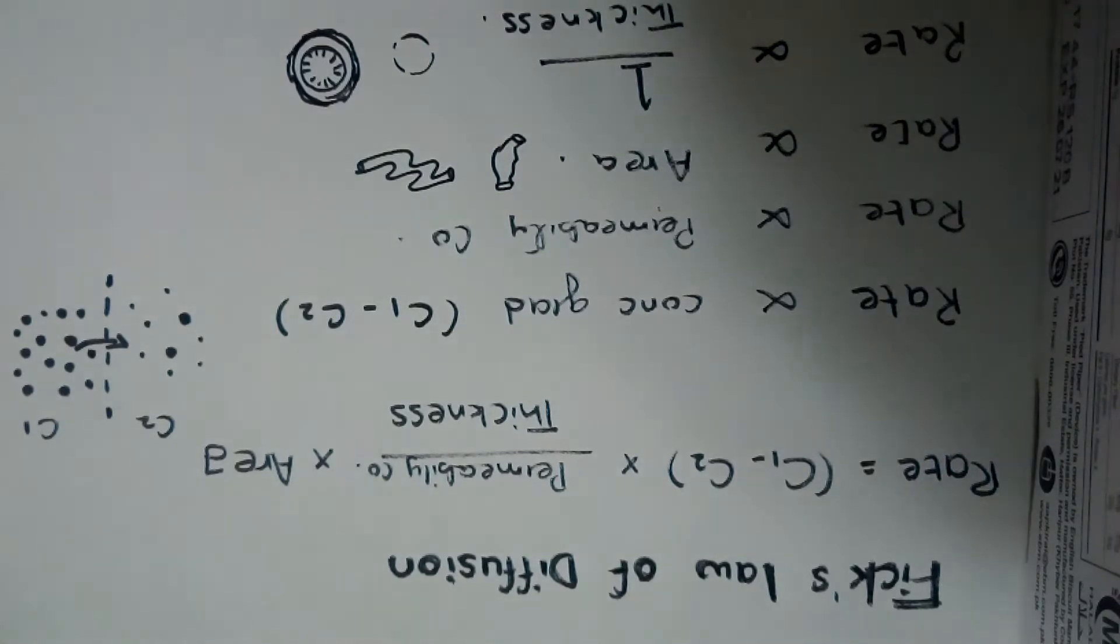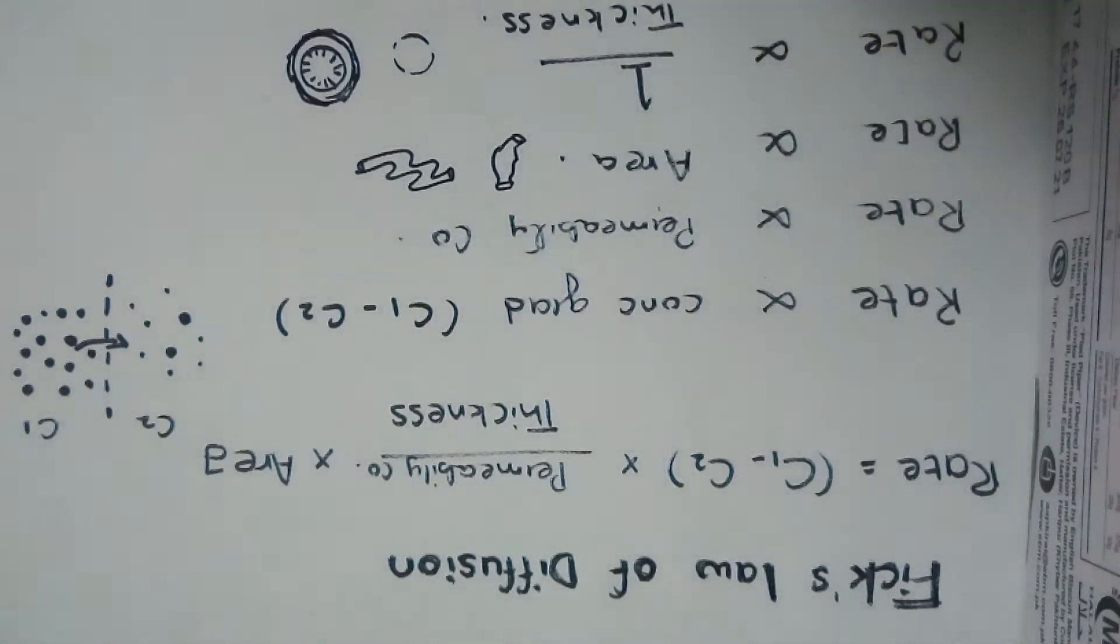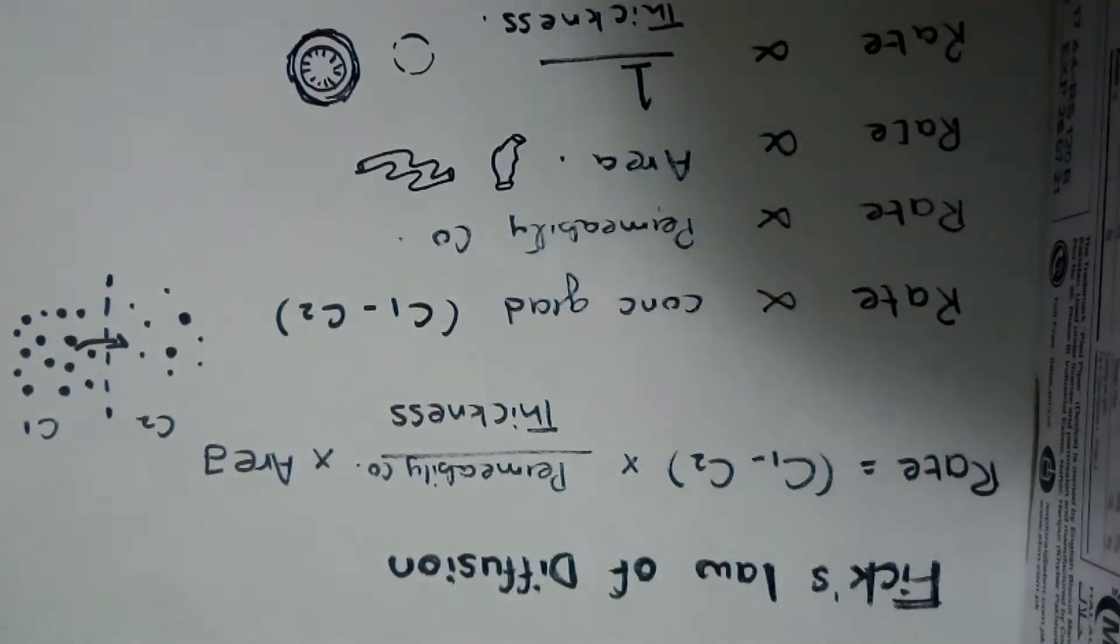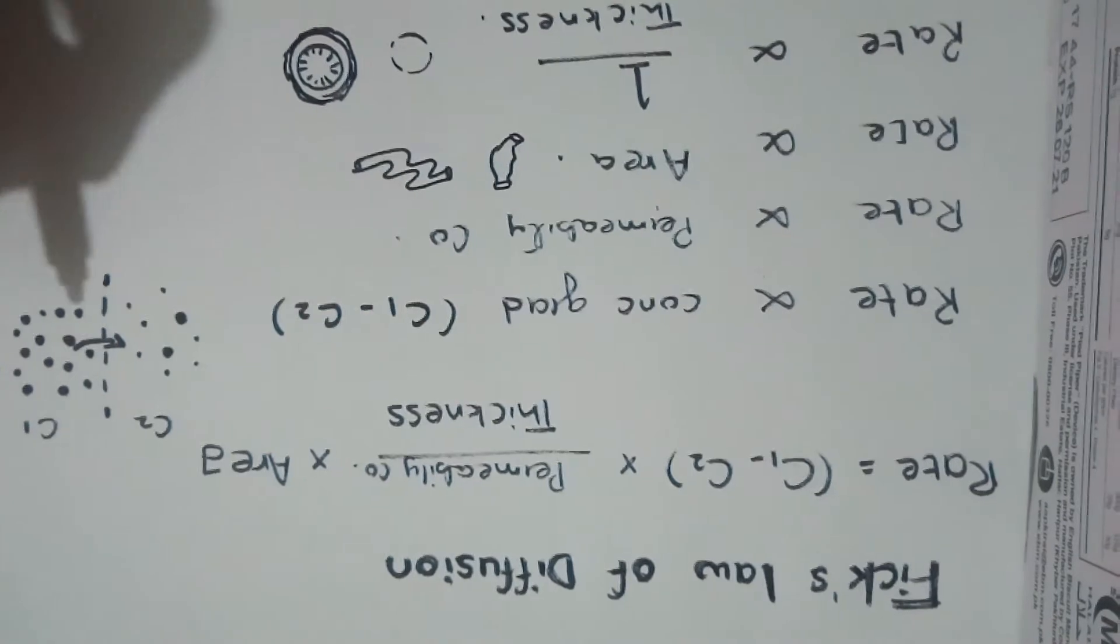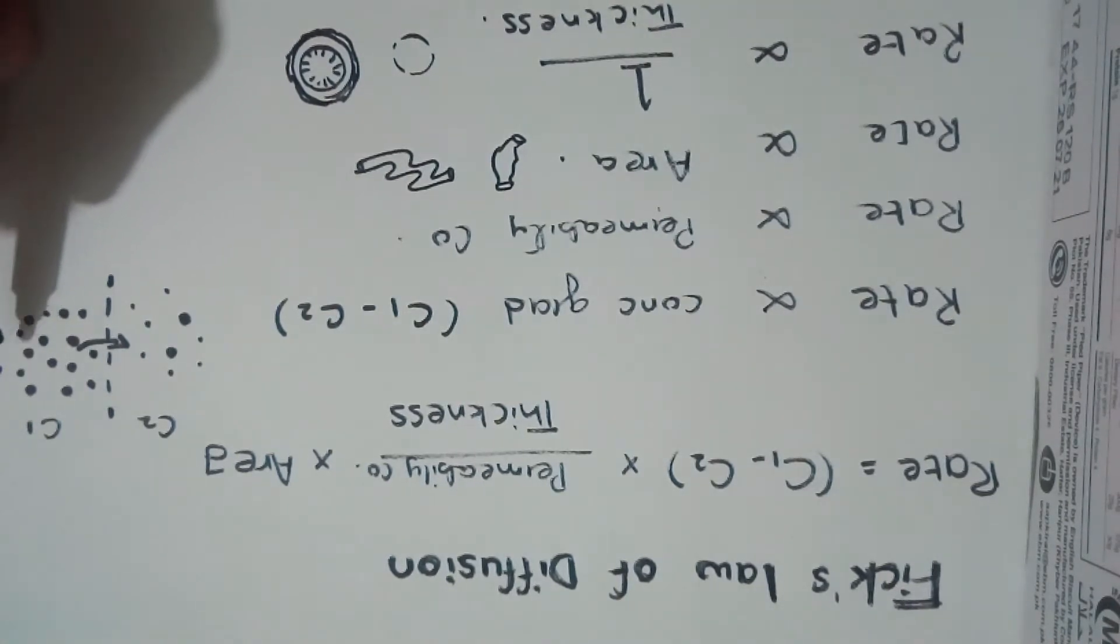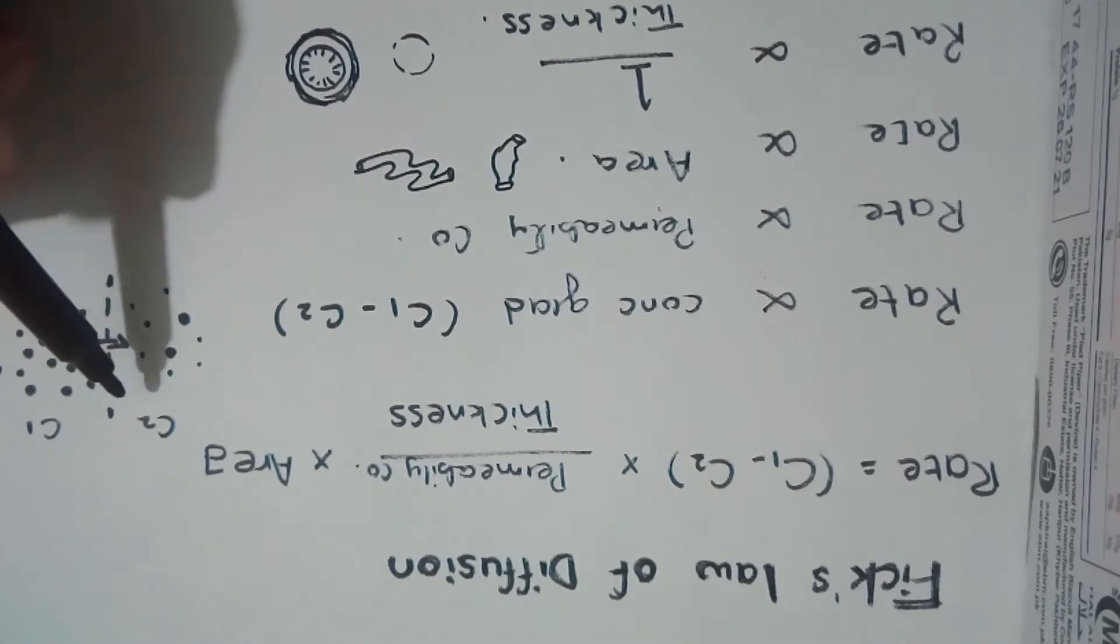At first glance, this equation seems a bit difficult, but the concept is very easy. The rate is directly proportional to concentration gradient, which means that if the concentration is higher outside the membrane and lower inside the membrane, then the rate of that absorption or diffusion would be much faster.